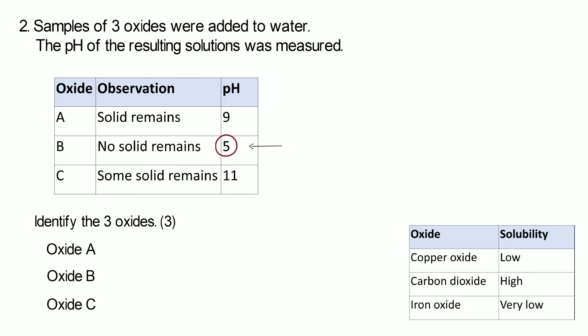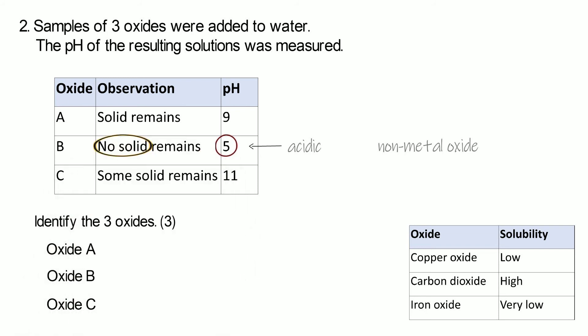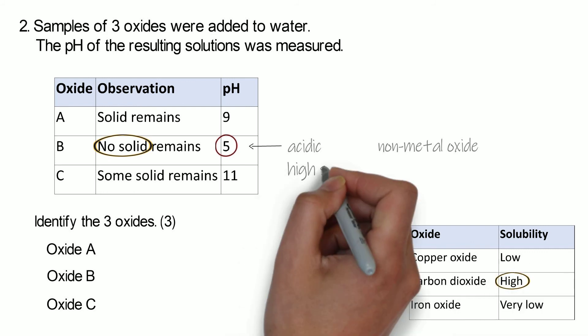Okay, so we can see that B produces a solution with a pH of 5, so that's acidic. It also dissolves completely, so it has a high solubility. And both of those things tell us that it's going to be a non-metal oxide. We know non-metal oxides form acidic solutions.